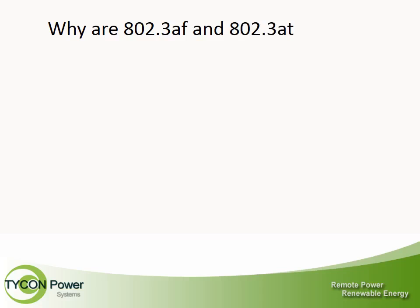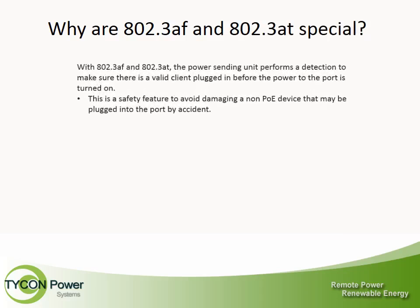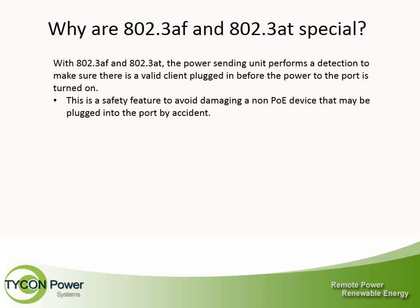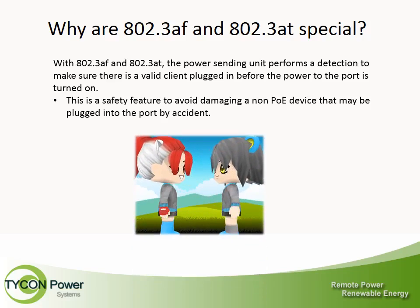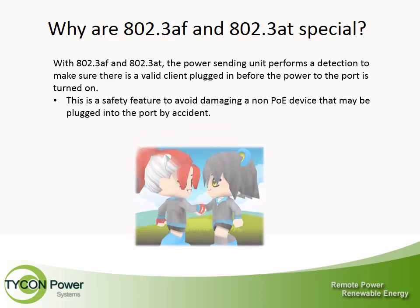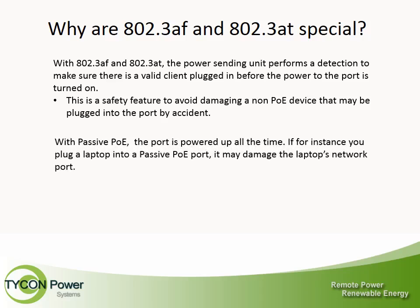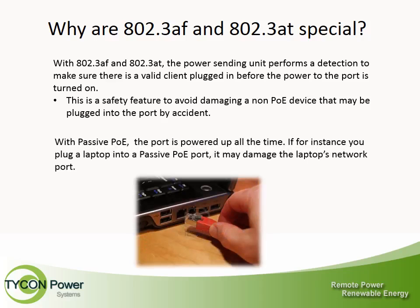Why are 802.3 AF and 802.3 AT special? With 802.3 AF and 802.3 AT, the power sending unit performs a detection to make sure there is a valid client plugged in before the power to the port is turned on. This is a safety feature to avoid damaging a non-PoE device plugged in by accident. With Passive PoE, the port is powered up all the time, and plugging in a laptop may damage its network port.